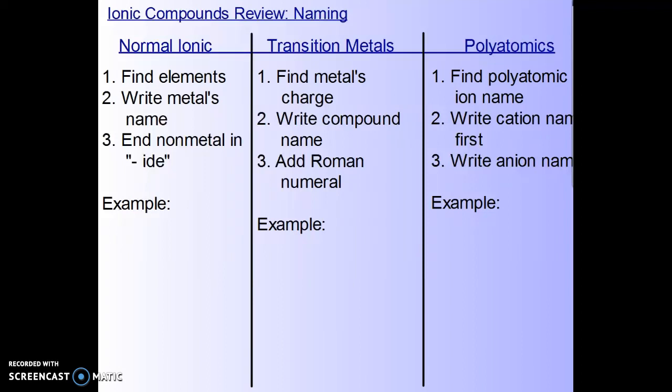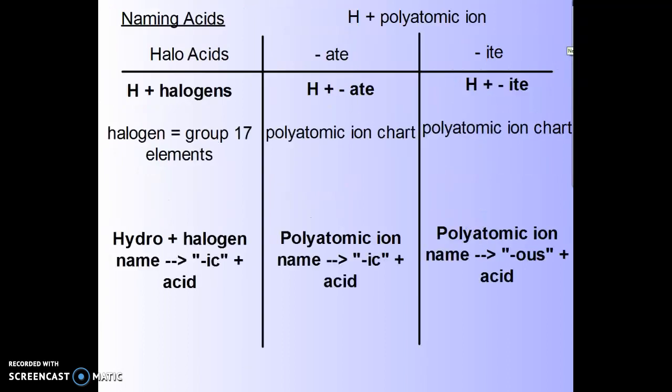To figure out if a compound is polyatomic, you would see more than 2 different elements in the compound. So in this case, we have metal with non-metals, but there's 1, 2, 3 different elements in the compound, so that means part of it must be polyatomic. So this whole thing is our polyatomic.